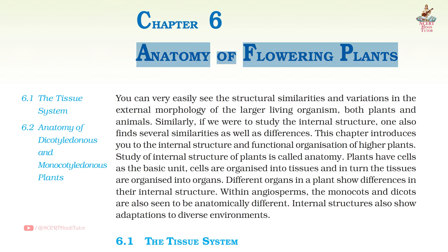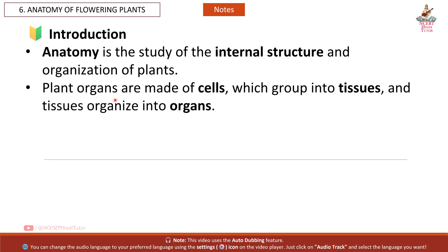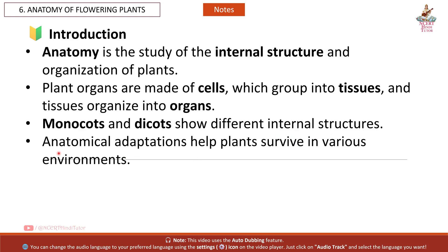Chapter 6: Anatomy of Flowering Plants — Short Notes and Summary from Class 11 Biology. Anatomy is the study of the internal structure and organization of plants. Plant organs are made of cells which group into tissues, and tissues organize into organs. Monocots and dicots show different internal structures, and anatomical adaptations help plants survive in various environments.